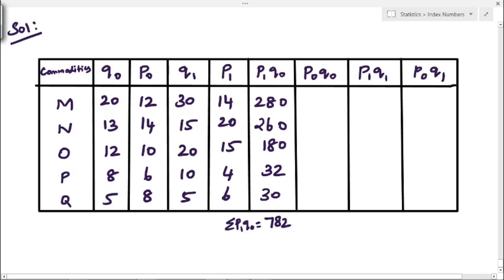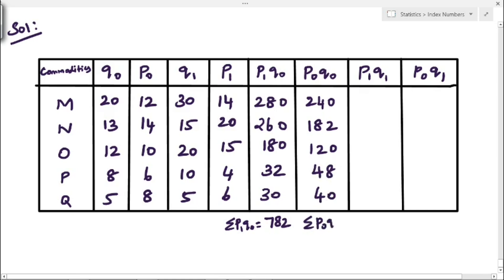Next, move on to P0Q0. We have to multiply the values of P0 with Q0. So: 20 into 12 is 240, 13 into 14 is 182, 12 into 10 is 120, 8 into 6 is 48, and 5 into 8 is 40. If you add all the values you will get 630.